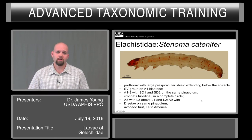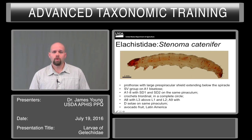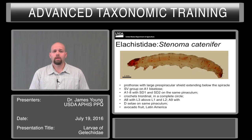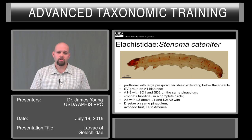This takes us to the last species, Stenoma catenifer. This is a major pest of avocado, and in many keys it will key out to Gelechia. Characters are provided that will help you screen it from other species. But please note that there are many species of Stenoma in Central and South America, many of which have larvae that are undescribed. If you are in any doubt of the identification, please submit it to a specialist for ID.